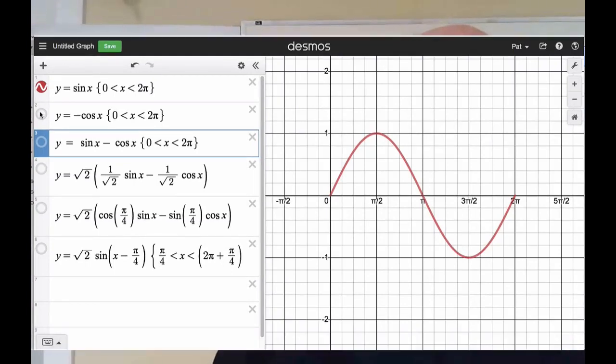Next, I want to graph y equals negative cosine x and that looks like that. Now I'll graph their difference or their sum, actually sine x plus negative cosine x.